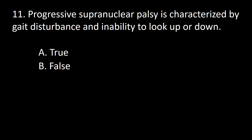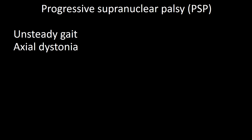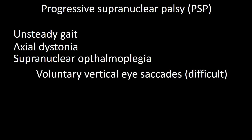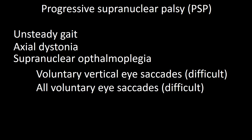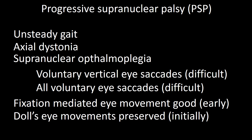Progressive supranuclear palsy is characterized by gait disturbance and inability to look up or down — A, true; B, false. Another condition mimicking Parkinson's disease is progressive supranuclear palsy. Initial symptoms are unsteady gait and axial dystonia, followed by supranuclear ophthalmoplegia. Initially vertical movements are affected — first it is hard to look down, later hard to look up, then impossible. This is followed by involvement of voluntary lateral eye movements, and eventually the eye becomes fixed in primary position.